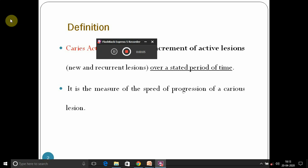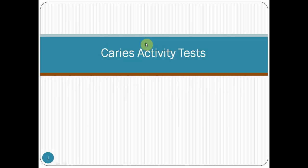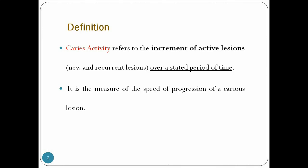Good morning everyone. Today we are seeing caries activity test. Caries activity test is nothing but measuring the active lesions over a stated period of time in a person — it is the speed of progression of a caries lesion, how fast a person will develop caries. That is what caries activity test is all about.